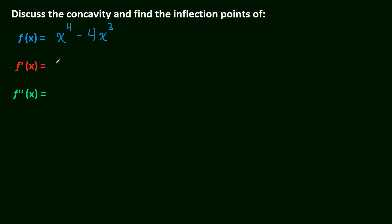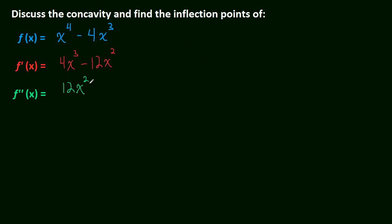First things first, let's take the first derivative, because we know that to determine concavity, we need to find out when the first derivative is increasing and decreasing. Taking this derivative is pretty easy. The first derivative is increasing when the slopes are positive and decreasing when the slopes are negative. So to find the slopes of the first derivative, we need the second derivative — that's the derivative of the derivative.